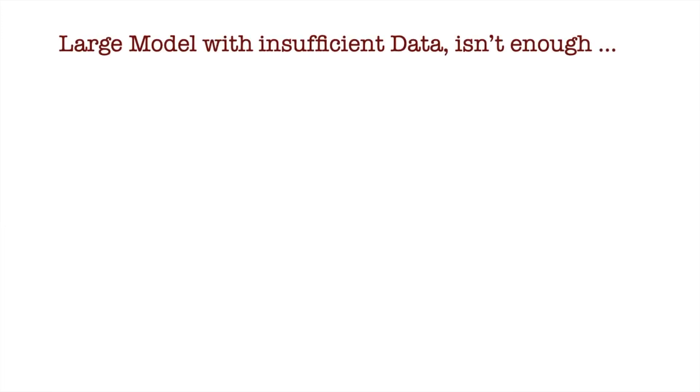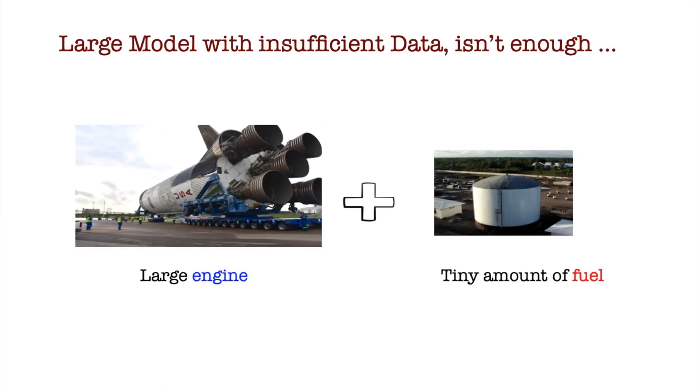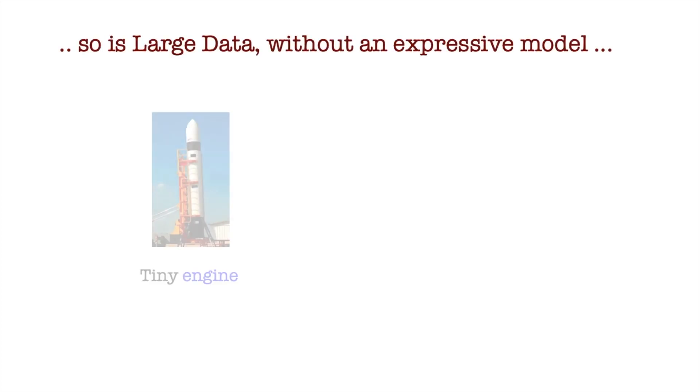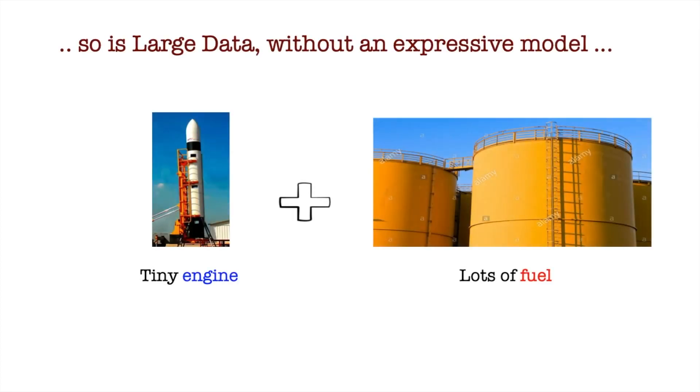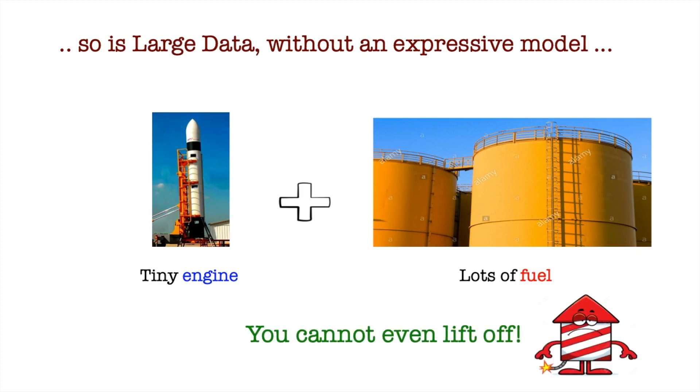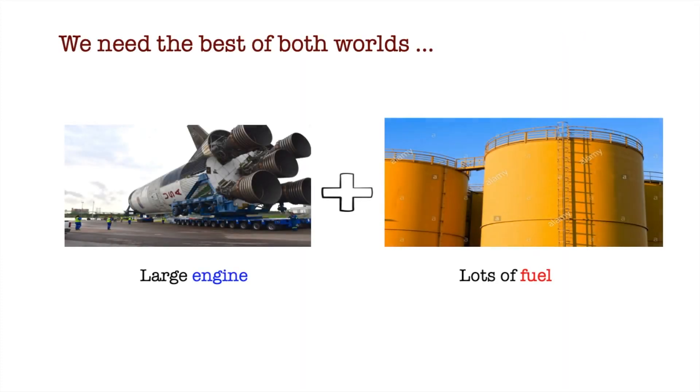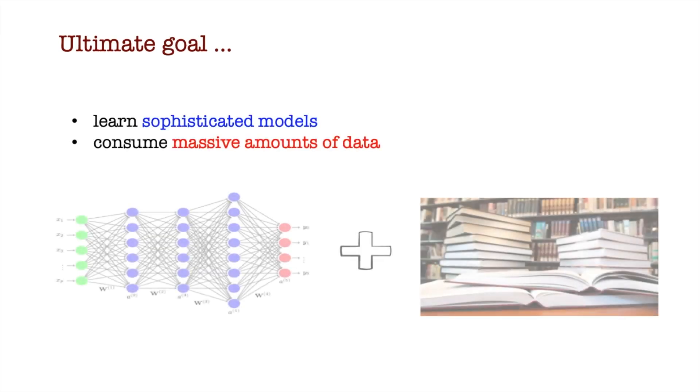If we have a large engine but really tiny amount of fuel we are not going to make it to the orbit. On the other hand, if you have lots of fuel but an engine not powerful enough, we might not be able to even lift off. So for a successful mission, we need a massive engine and tons of fuel. This is the ultimate goal in machine learning to learn sophisticated models that can consume massive amounts of data.